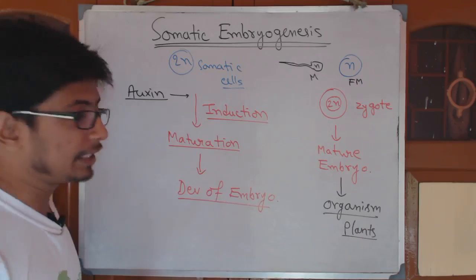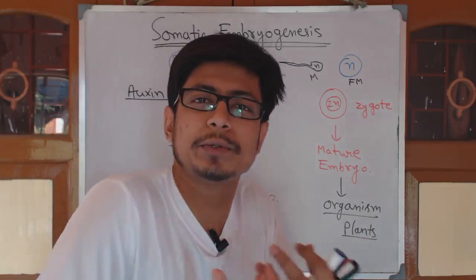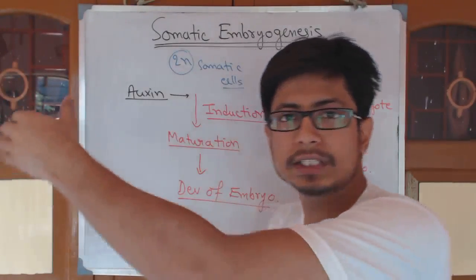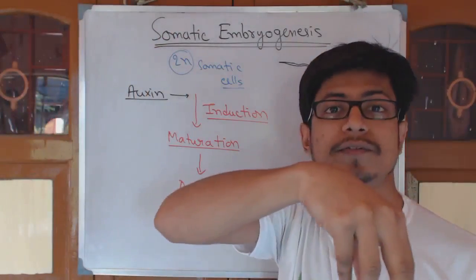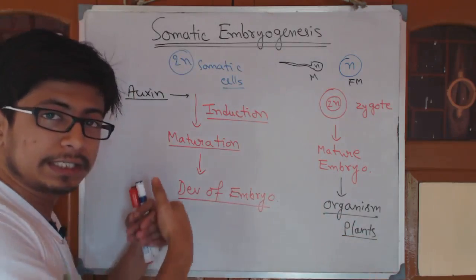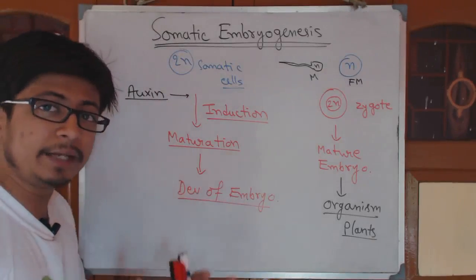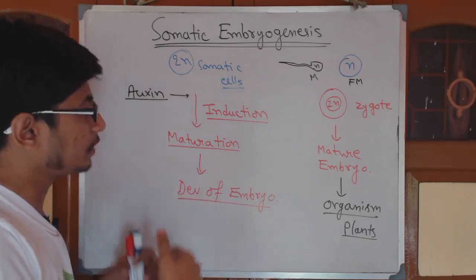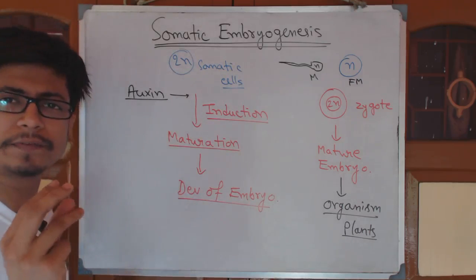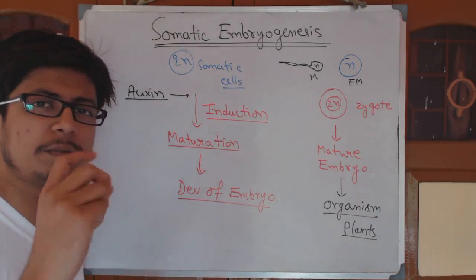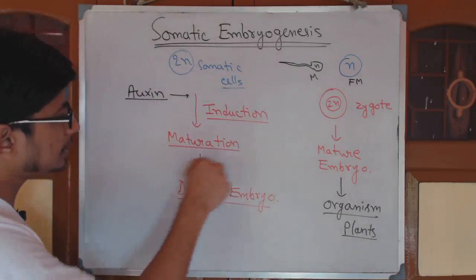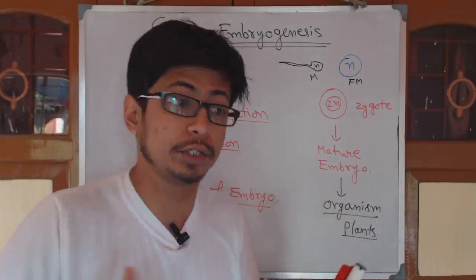Once the induction phase is done and callus is formed, the callus has the ability to grow into a mature plant. We place it in nutrient jars, and once conditions are established we transfer the mass of cells to freshly nutrient-filled jars so that nutrients keep supporting growth. The differentiated cells start maturing and forming the structure of an embryo, converting into a specific kind of structure that has the capability of developing into an adult organism.